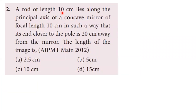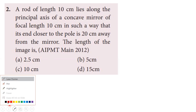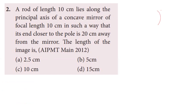A rod of length 10 cm lies along the principal axis of a concave mirror of focal length 10 cm, such that its end closer to the pole is 20 cm away from the mirror. The length of the image in the concave mirror. The center of curvature is at 2F from the pole. The rod is 10 cm and focal length is 10 cm.